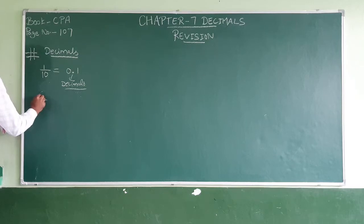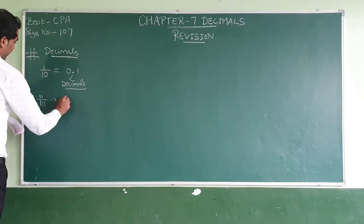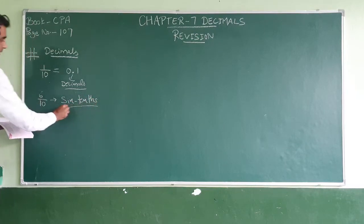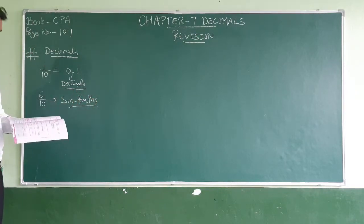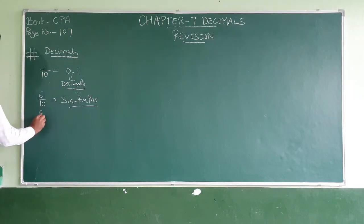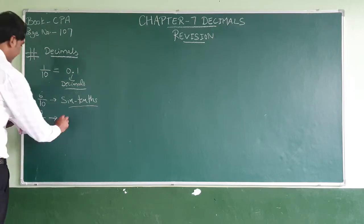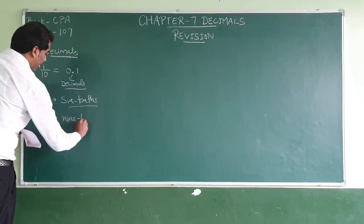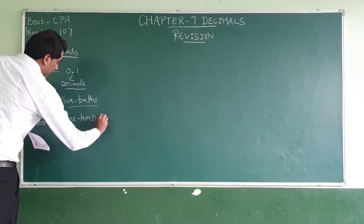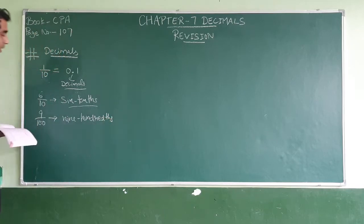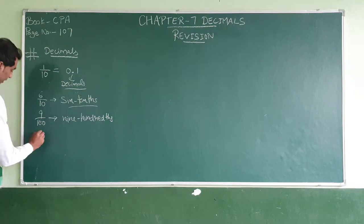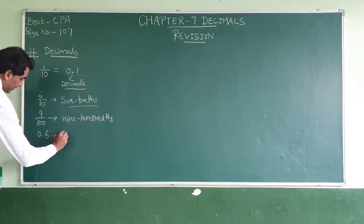After that we have done decimal fractions. For example, 6/10 can be written as 0.6, so we say 6 tenths. If we have 9/100, we say 9 hundredths. And 0.6 means six tenths — we can say 0.6.